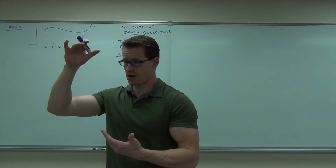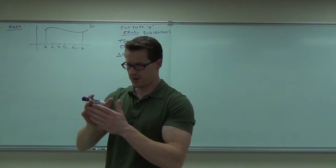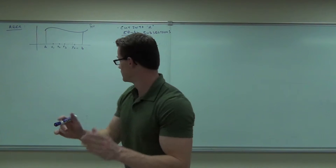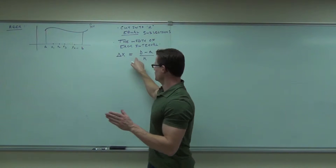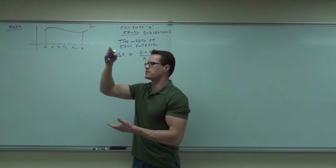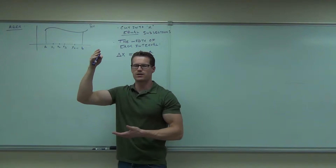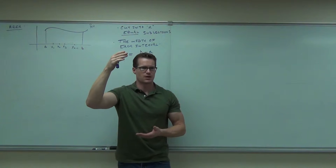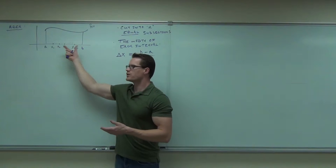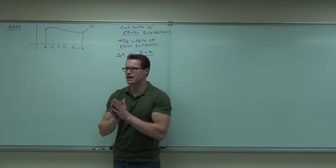In order to find the area of a rectangle, we're going to find the base times whatever the height is. We need to find a way to find the height. Once we do that, we'll have all these rectangles, we'll add them together — it'll be very nice and easy.